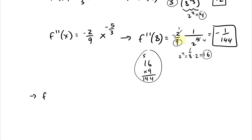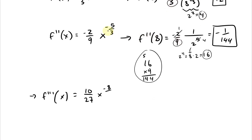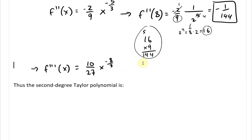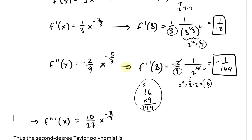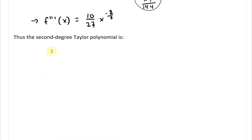For the third derivative f'''(x): we take the derivative of (−2/9)x^(-5/3). Bringing down −5/3: (−2/9) × (−5/3) = 10/27, and the exponent becomes −5/3 − 1 = −8/3. So f'''(x) = (10/27)x^(-8/3). We don't need to evaluate this at 8 yet — we'll use it later for the error approximation.